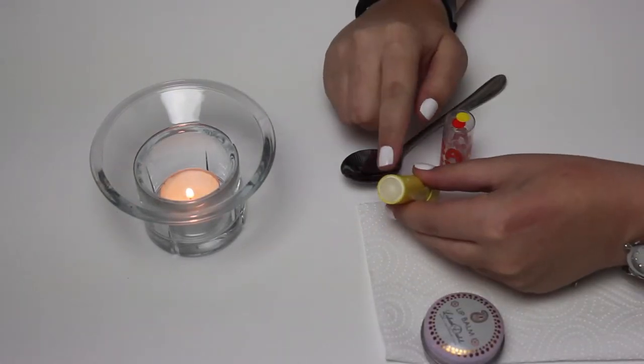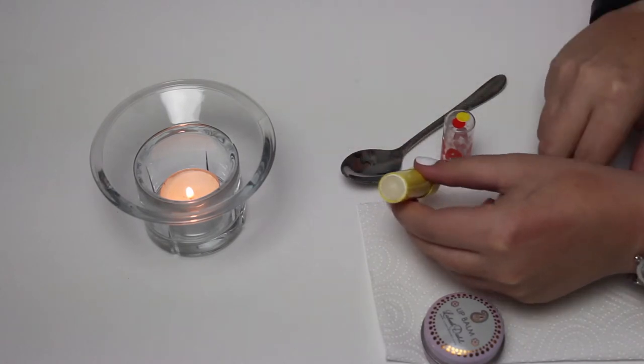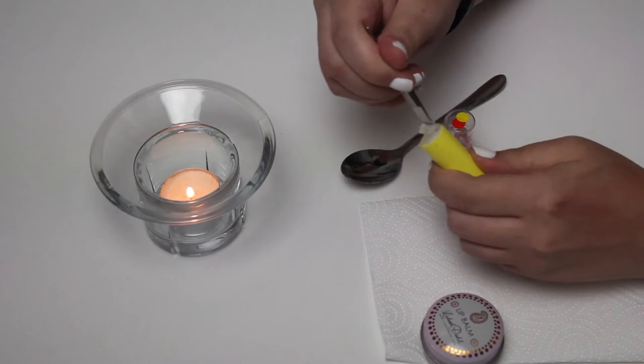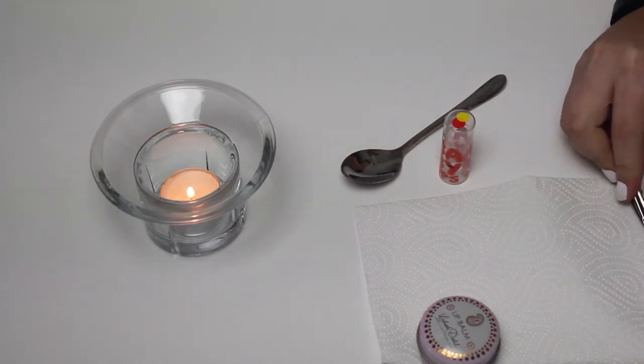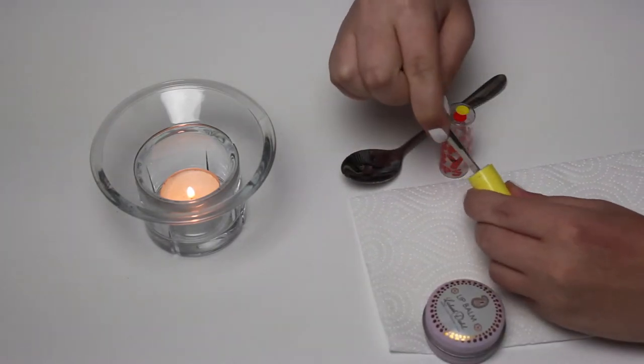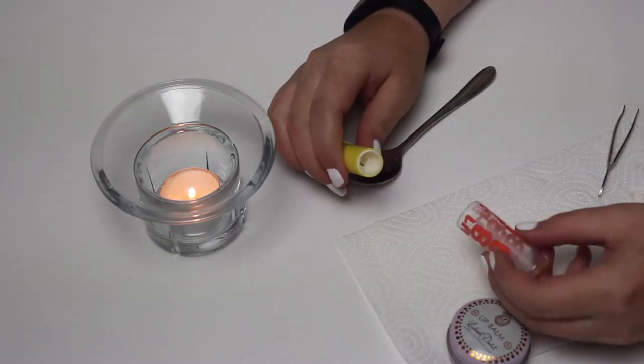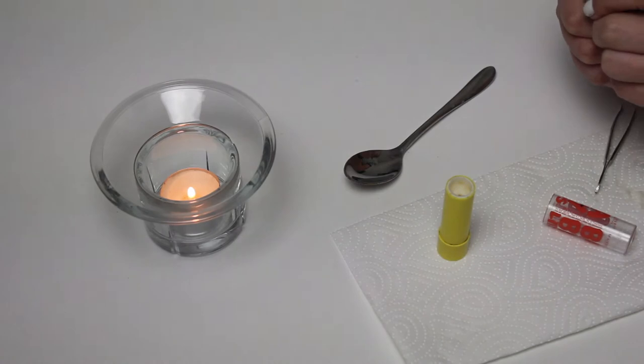Then I am going to dig out the remaining product from the sticky lip balm so I can make room for the new product. I am just going to use the other end of a tweezer. Now it's cleared out and it is ready to be depotted into.